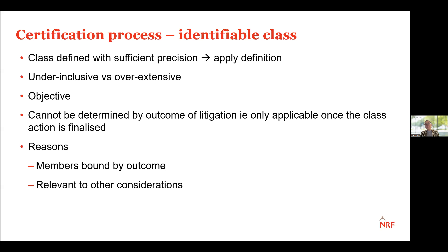A class is also very unlikely to satisfy the requirement if the definition makes membership dependent on the outcome of the litigation. For example, if the definition is dependent on members suffering loss as decided by the court at the class action stage, or on the defendant's ability to raise defences to some members' claims but not others, it makes it impossible to identify the class until after certain facts are proven or certain defences are rejected. The definition is not going to work if it will only apply at the end of the class action — it must be applied to the class as they stand at certification stage.